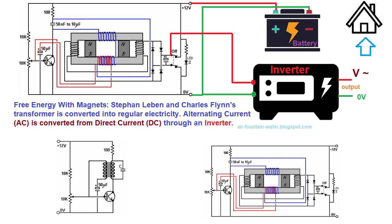Levin seamlessly integrates Charles Flynn's Free Energy Transformer into the equation, laying the groundwork for the revolutionary breakthrough. By combining Flynn's transformer with Meissner's Circuit, the result is an astonishing scenario where the output power exceeds the input power — an occurrence known as overunity.